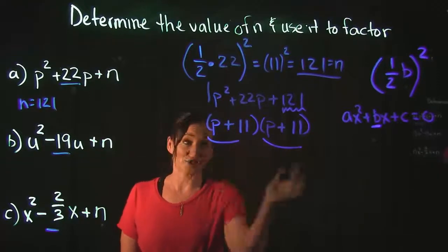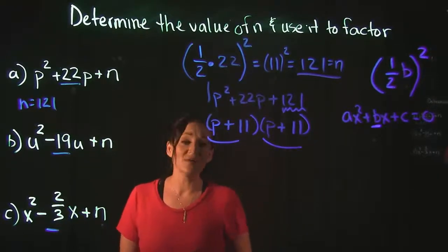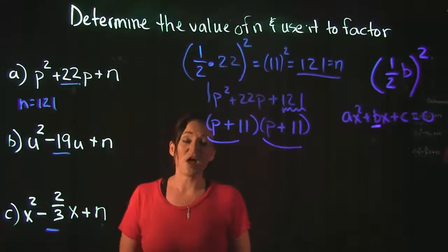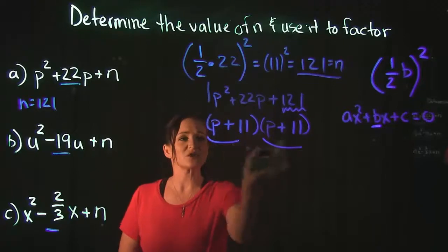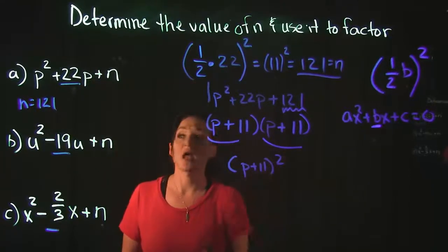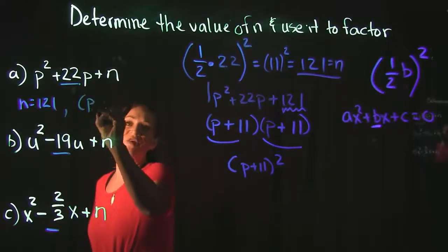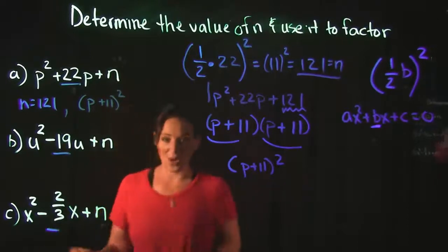You should get the same factor for both of these here—p plus 11 times p plus 11—which means our problem is factored. But to simplify and put it in proper notation, because these are the same exact factor, we write it like this: p plus 11 squared. So we got 121 for n, and when we factored it, we got p plus 11 squared.